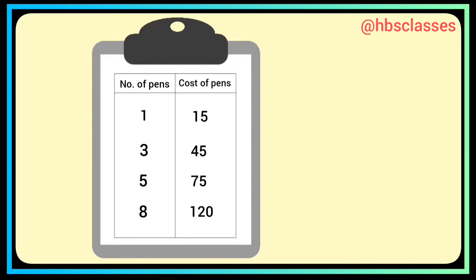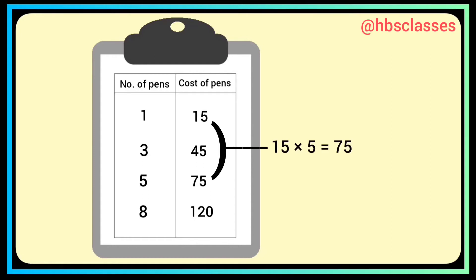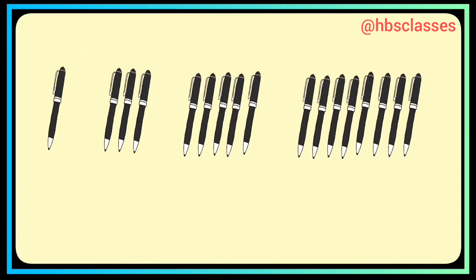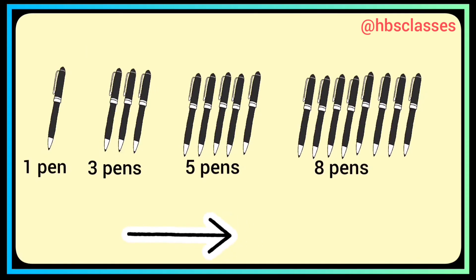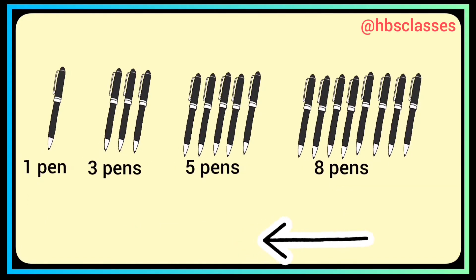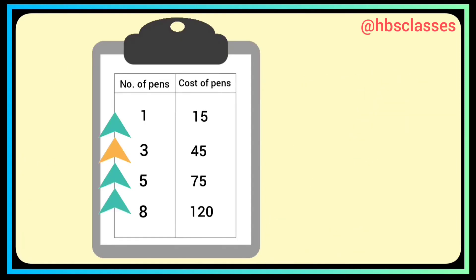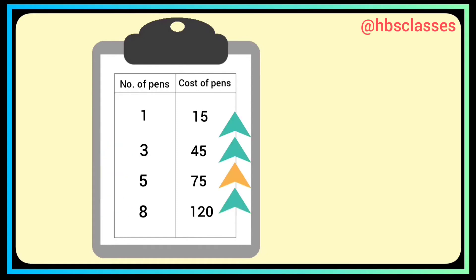The number of pens increased three times, so the cost also increased three times. In the third case, the number of pens increased five times, so the cost also increased five times. In the fourth case, the number of pens increased eight times, so the cost also increased eight times. We observe that the increase in one quantity causes the increase in another, and similarly a decrease in one causes a decrease in the other.